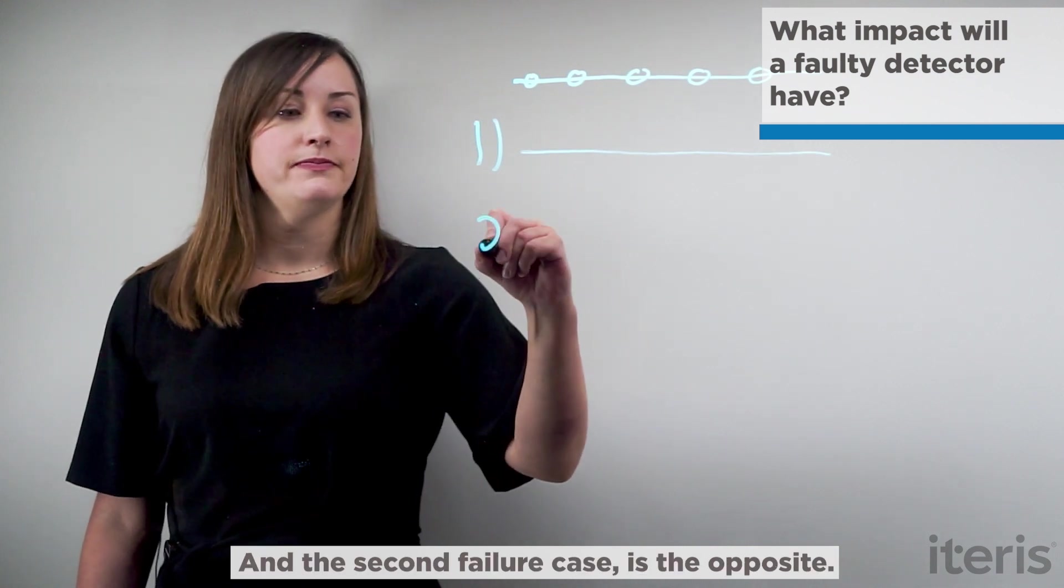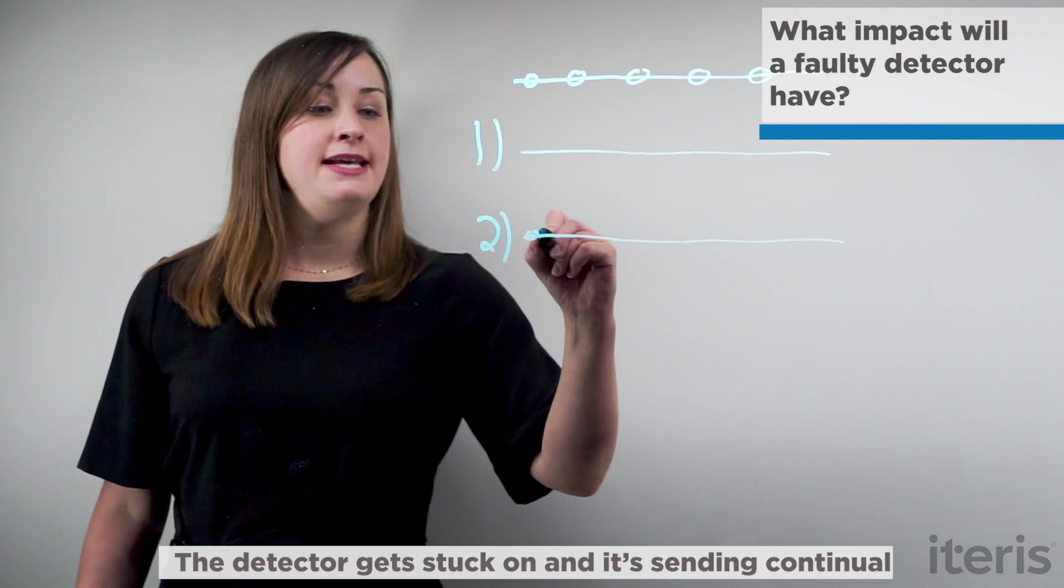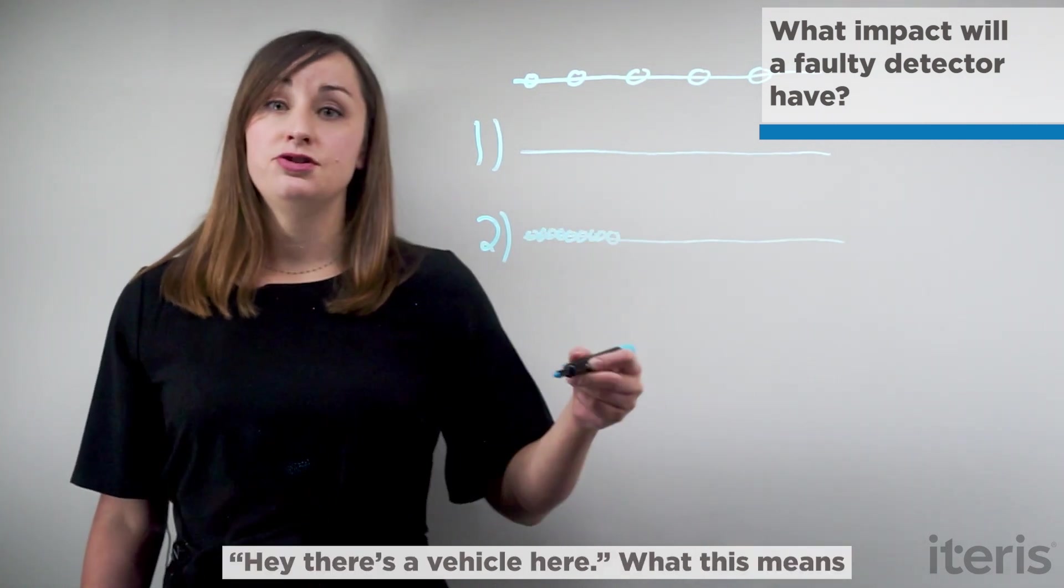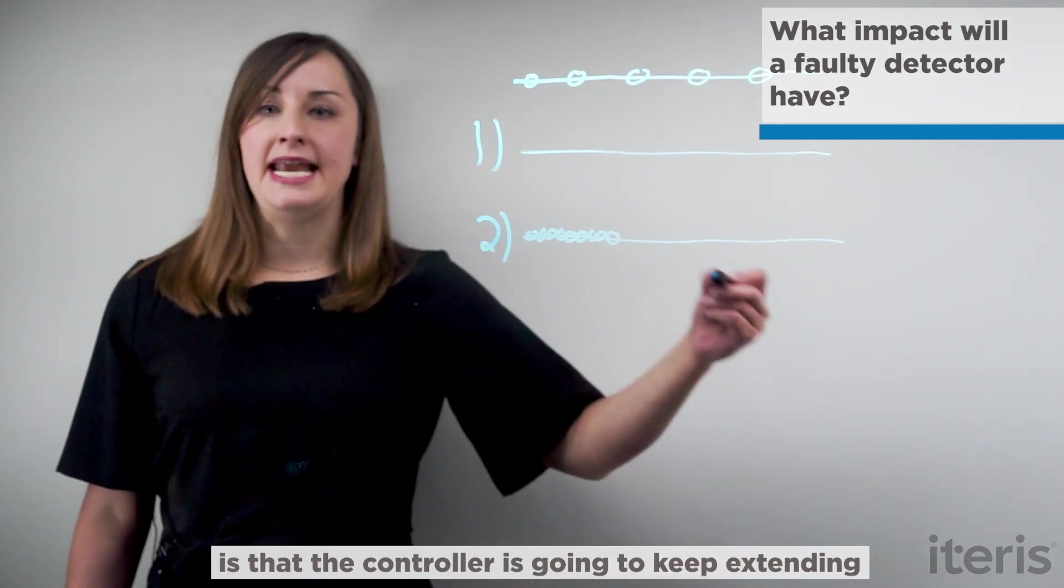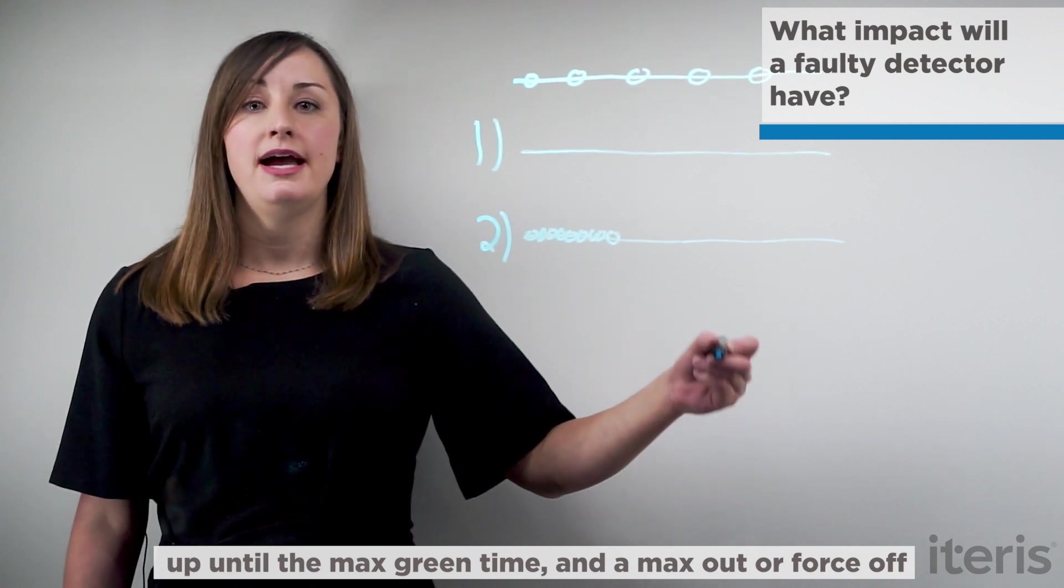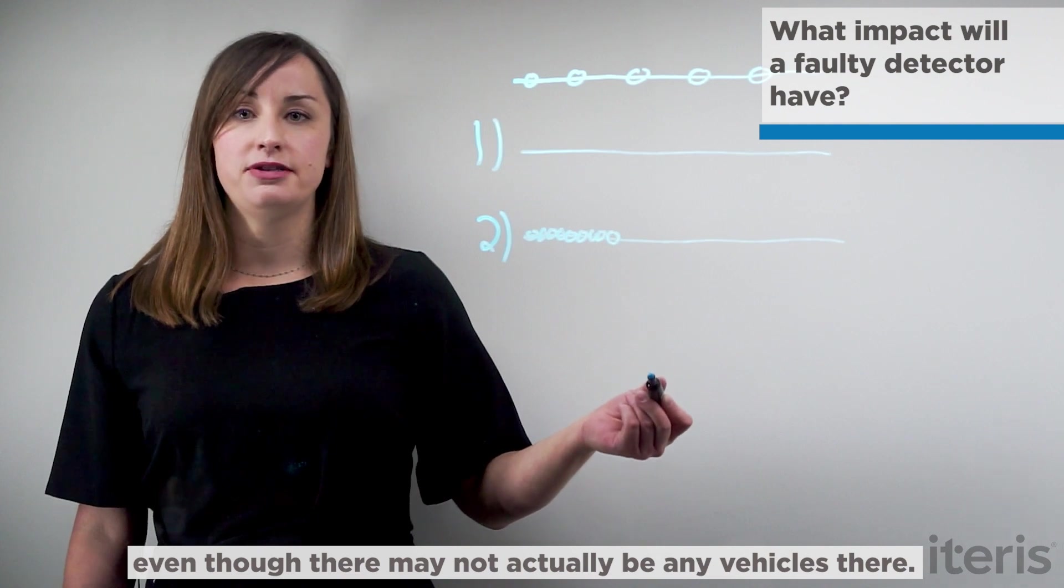Now the second failure case is the opposite. The detector gets stuck on and it's sending continual data to the controller saying, hey, there's a vehicle here. What this means is that the controller is going to keep extending the green time for that phase up until the max green time and a max out or a force off, even though there may not actually be any vehicles there.